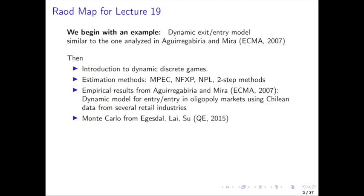MPEC and NFXP are full solution implementations of the maximum likelihood estimator, which is the most efficient thing you could do, but it's really computationally costly. The two-step estimators on the other hand may be less efficient in terms of statistical efficiency, but much more easy to implement and faster to compute.